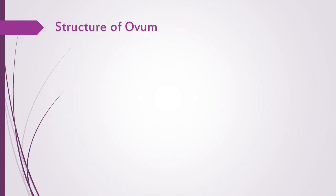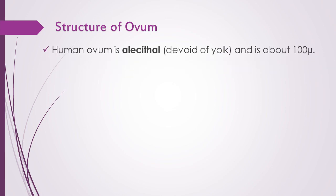Some important points related to the structure of ovum: human ovum is alecithal, meaning it is devoid of yolk. As humans are placental organisms, the developing embryo draws nutrition directly from the mother's body through the placenta. In contrast, egg-laying animals lay bulky eggs with enormous amounts of yolk, which serves as stored food for the developing embryo.